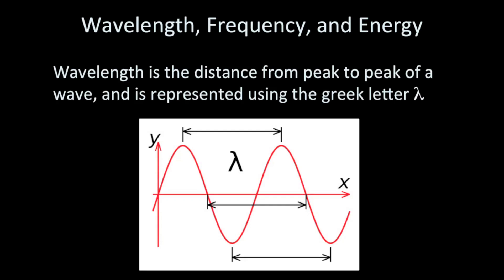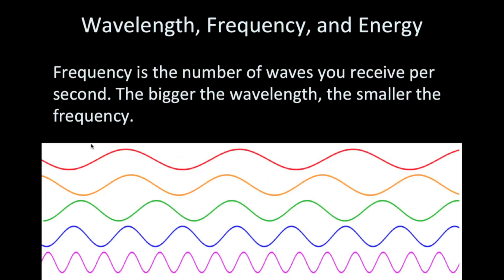Wavelength is the distance from peak to peak of a wave. In astronomy and physics, we generally use the Greek letter lambda to describe that. So from peak to peak would be one wavelength — you could also go from the middle of the wave to the next middle, or from trough to trough; that would be a complete wavelength. Frequency is the number of waves you receive per second, usually measured in hertz. If you've got a bigger wavelength, it will take longer for a complete wave to pass by, so the bigger the wavelength, the smaller the frequency. Shorter wavelengths correspond to higher frequencies.